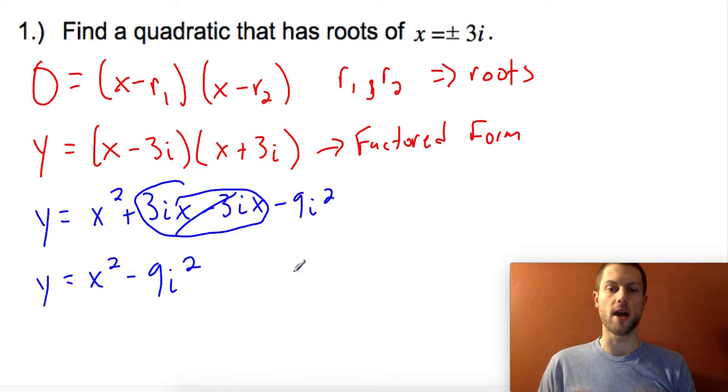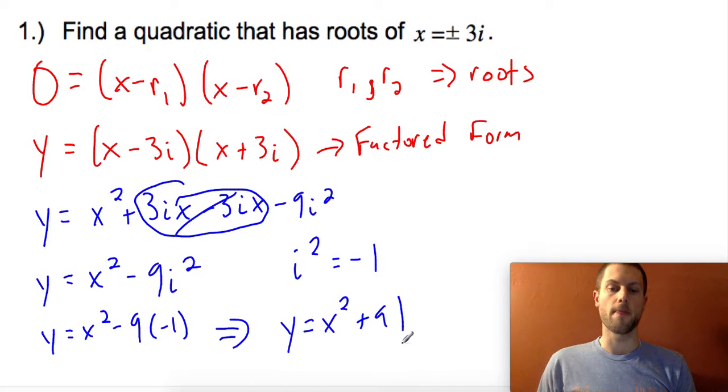At this point, remember that i² simplifies to -1. If I substitute that in, y = x² - 9(-1), so my final answer in standard form is y = x² + 9.